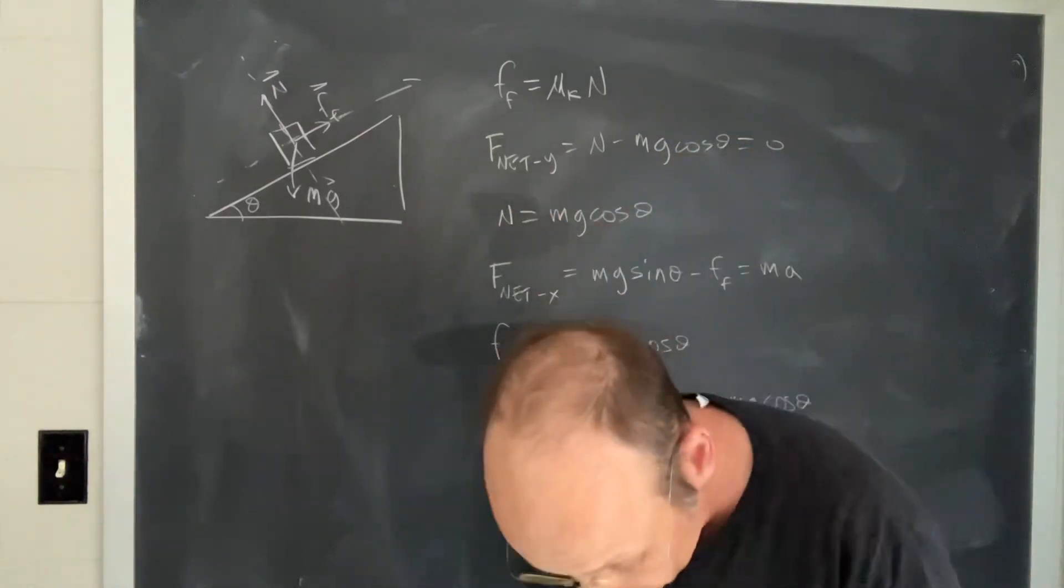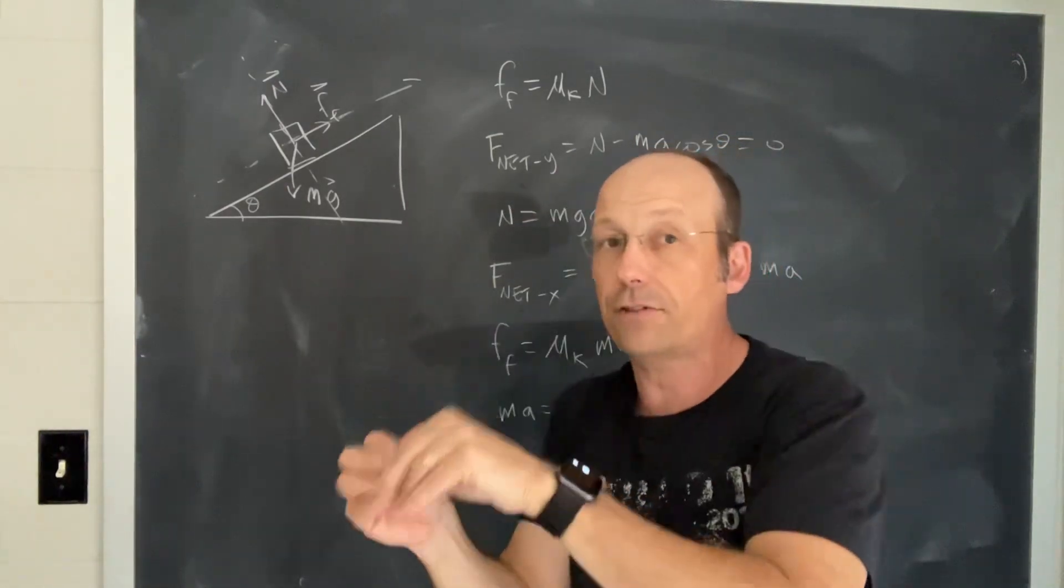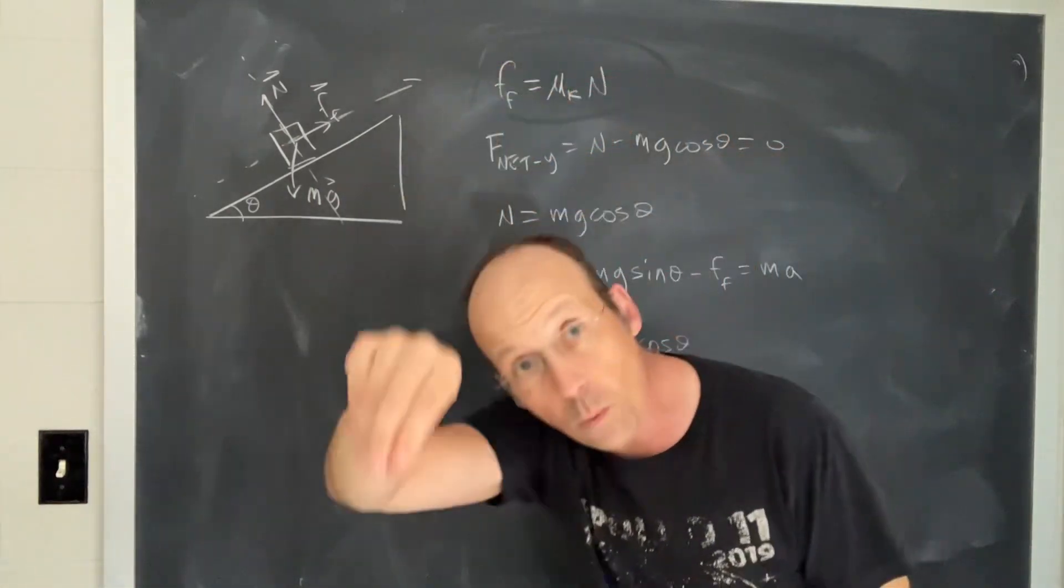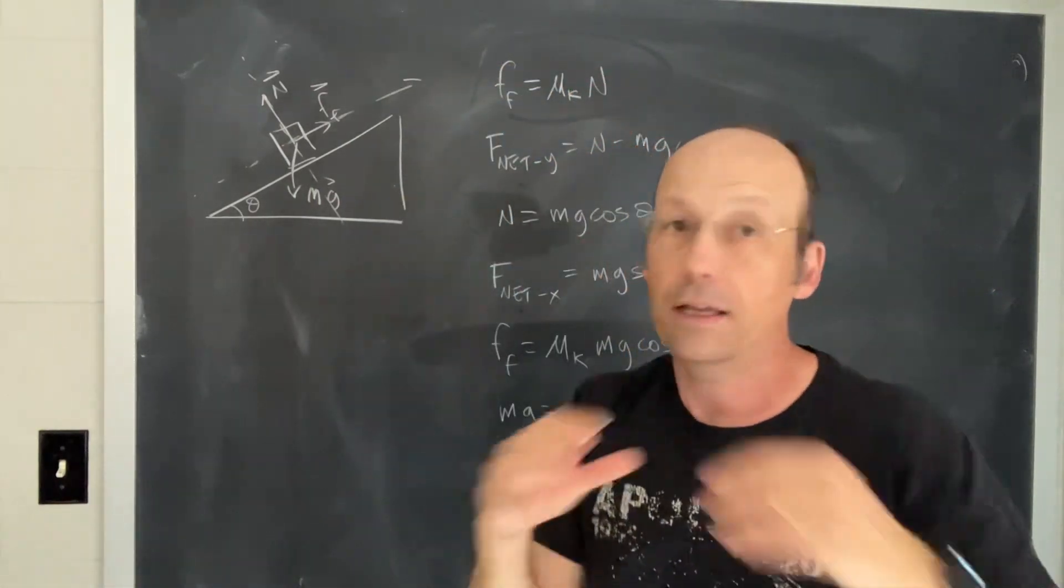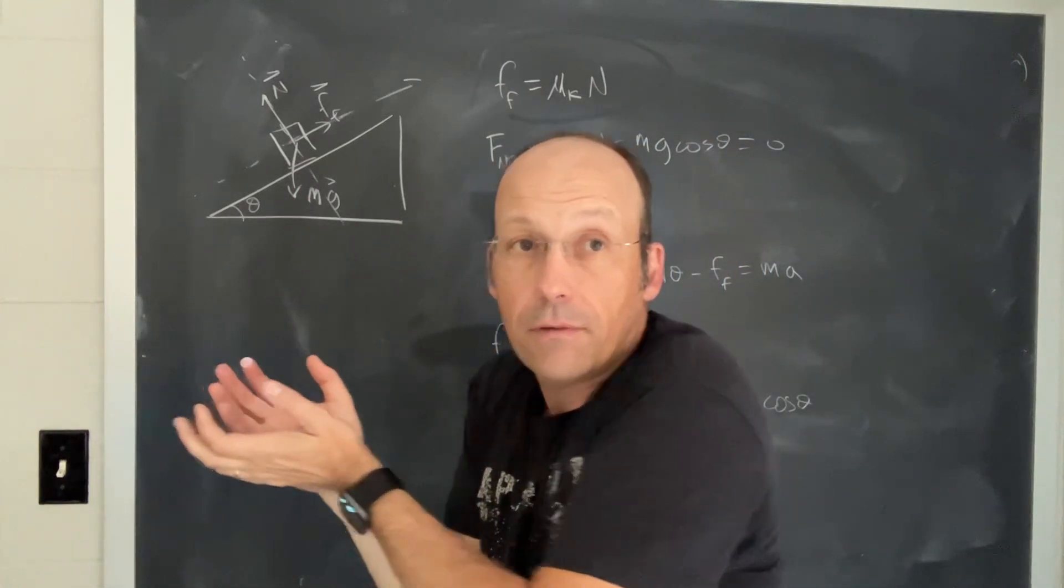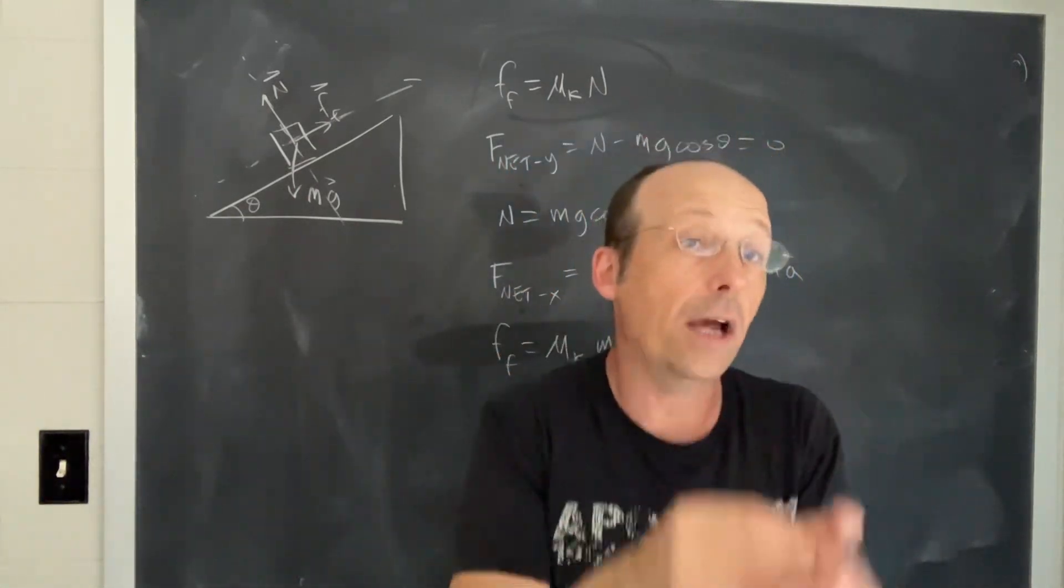So the acceleration of the person down the slide, if you use the normal model of friction, which doesn't always work, but it's good enough, then it doesn't matter. It doesn't matter that he's a grown-up versus a child. It matters what he's wearing.